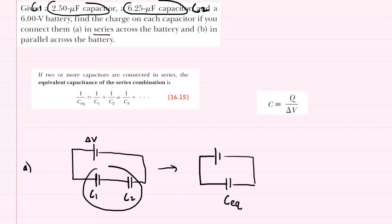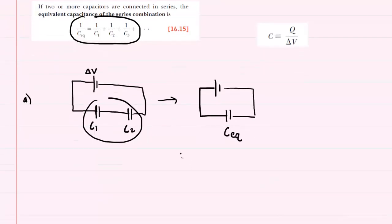Now we can calculate CEQ by obeying this formula for series capacitors. So we can begin by writing the formula down here. 1 over CEQ is equal to 1 over C1 plus 1 over C2.